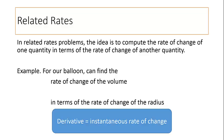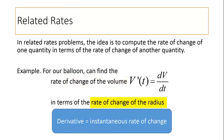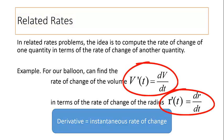Remember that one of the most important interpretations of the derivative is as an instantaneous rate of change. So when we talk about the rate of change of the volume, we mean the derivative of the volume, v prime of t, or dv/dt, since our volume is changing over time as we pump more and more air into our balloon. Similarly, the rate of change of the radius is the derivative of the radius, r prime of t, or dr/dt. So in related rates problems, we want to relate different rates — that is, to find a relationship between derivatives, such as the derivative of the volume and the derivative of the radius of our balloon.